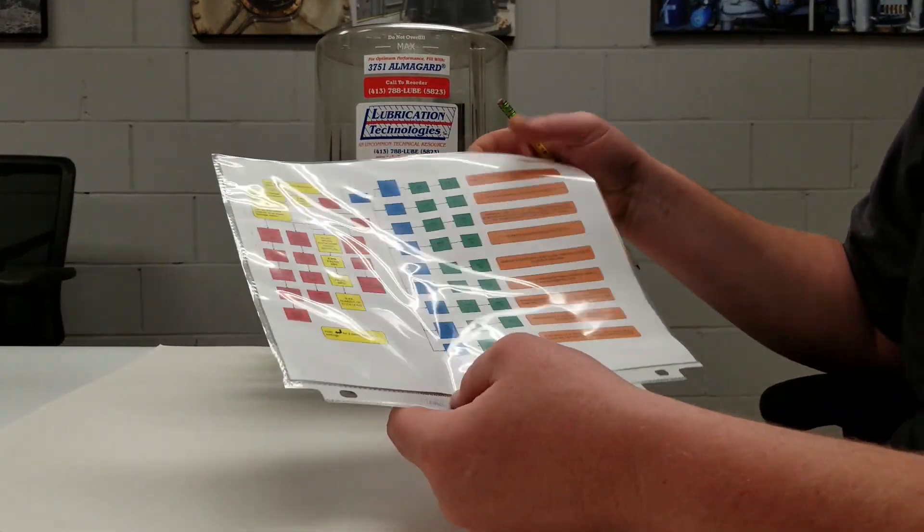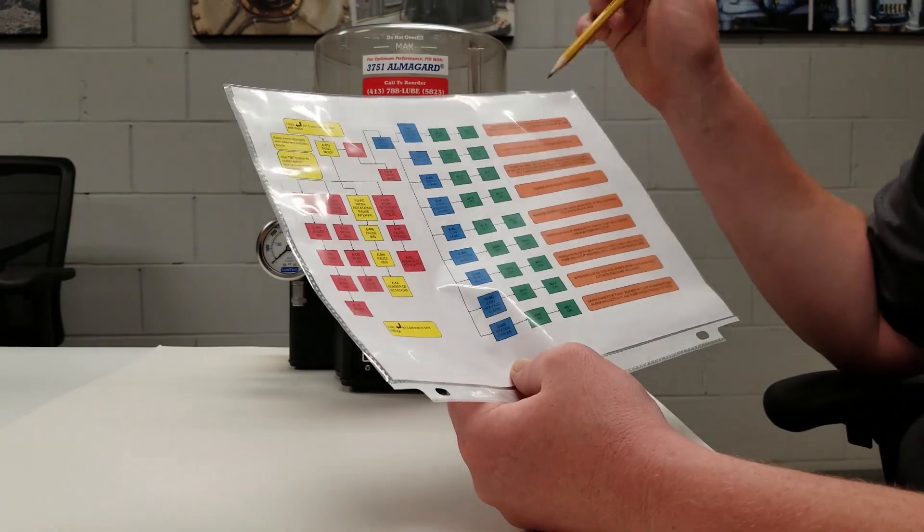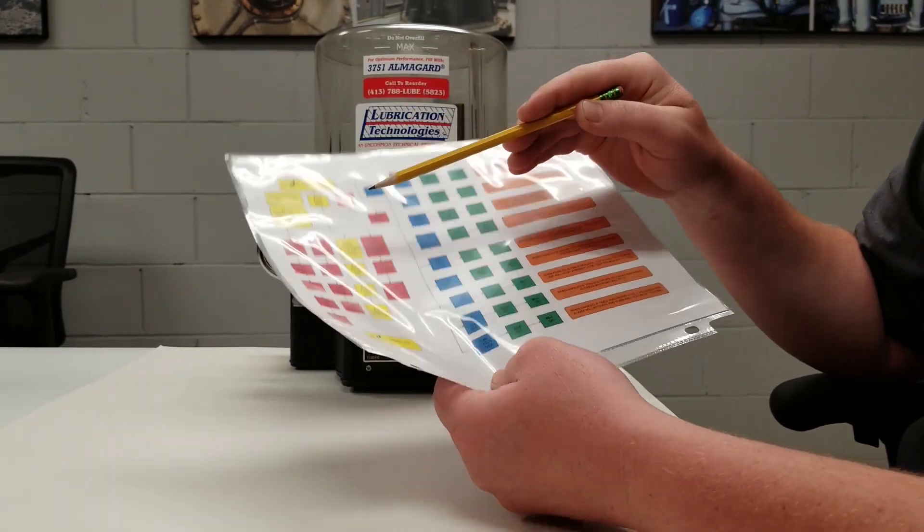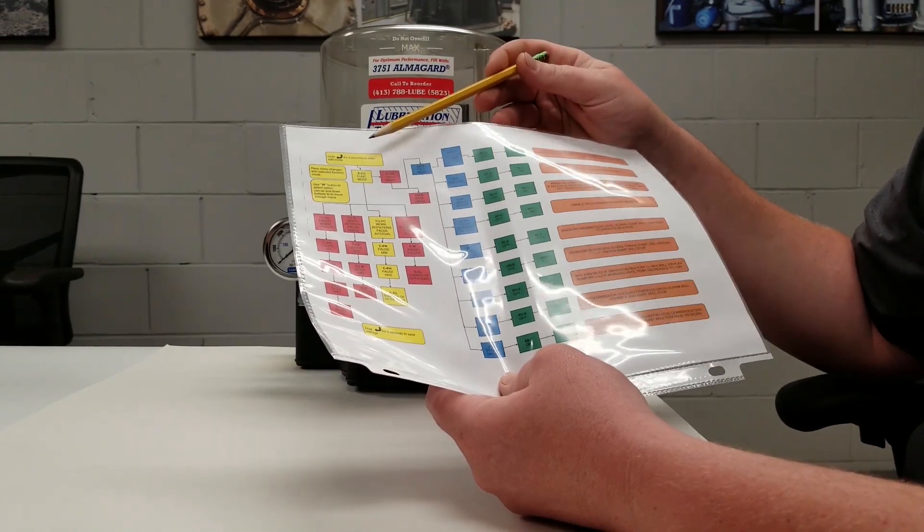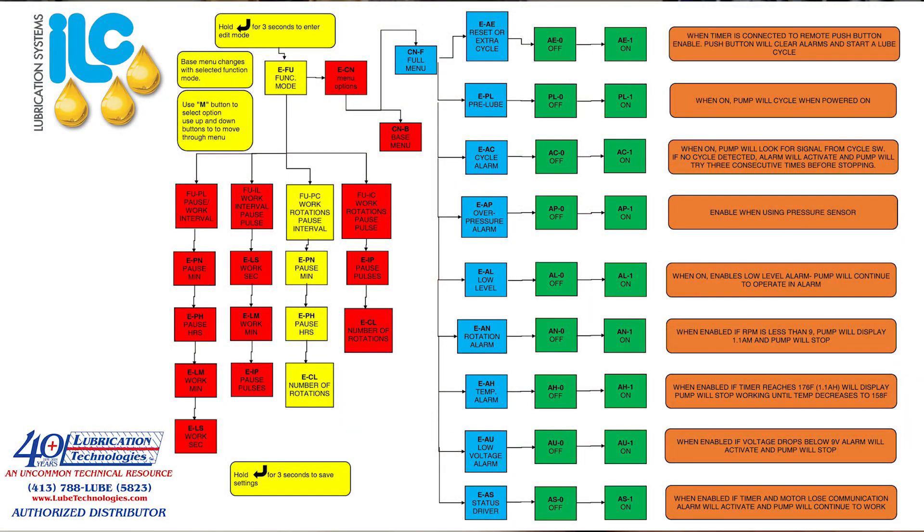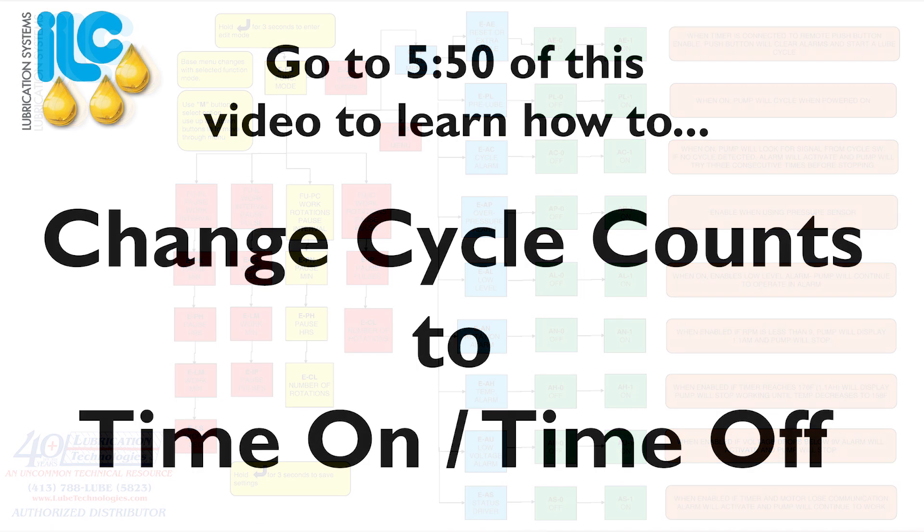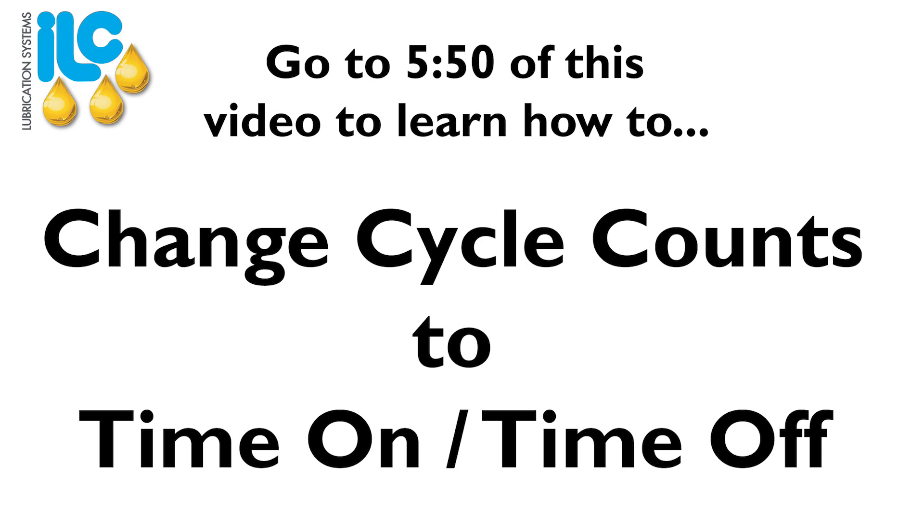So we have a document that we can send out to our customers that will go over the steps in the flow chart as we just went over to change your rotation count. They start with holding the enter button for three seconds and it will walk you through each individual step. To change the rotation count you can see here we've highlighted the steps in yellow to tell you how to change your time on and time off if that is the way that your pump is programmed.